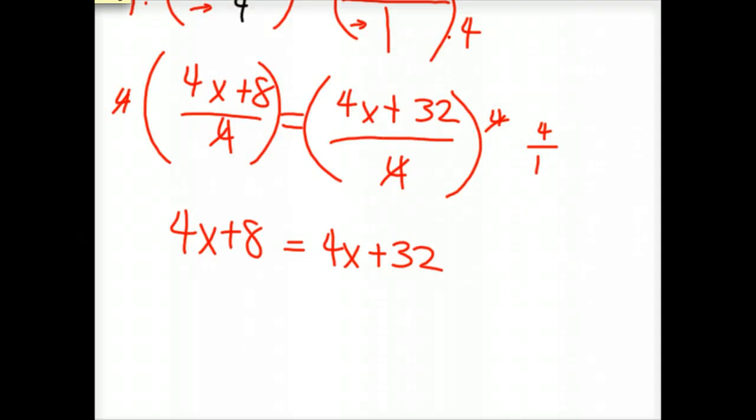Apologize if I'm going too fast. And so, 4 over 1 times basically 1 fourth is how I'm getting the 4s to cancel out. That's how I'm getting that to cancel out.